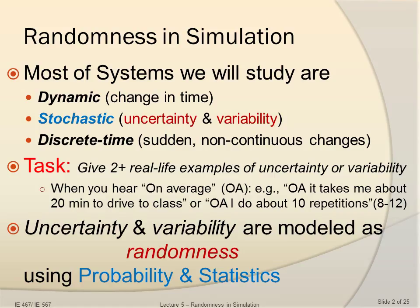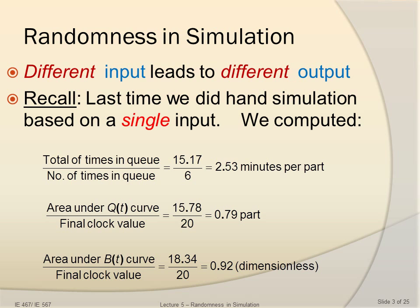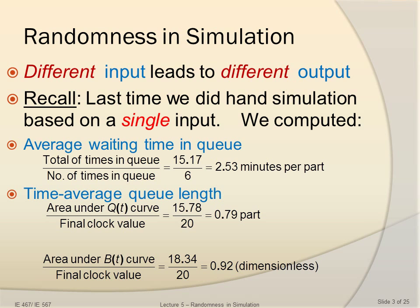Uncertainty and variability are modeled as randomness using probability and statistics. As you can see, different input leads to different output. Recall that last time when we looked at the simple processing system, we did this hand simulation that was based only on a single input. We computed the average waiting time in queue, the time-average queue length, and also utilization of the drill press.